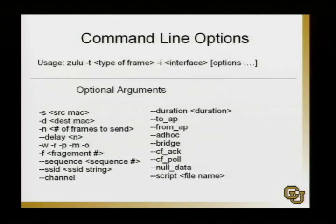A quick review: essentially only two required options are needed to run this tool. The dash-T option, where you provide the type of frame — this can be a probe request frame, a data frame, an RTS or CTS frame. It supports any frame within the 802.11 specification except for the control ACK frames, since those are controlled by the card firmware and most drivers won't allow you to send those. Looking further down, there are tons of optional parameters: you can set the source and destination MAC of the frame, specify how many frames to send for de-auth attacks, and set a delay between frames.